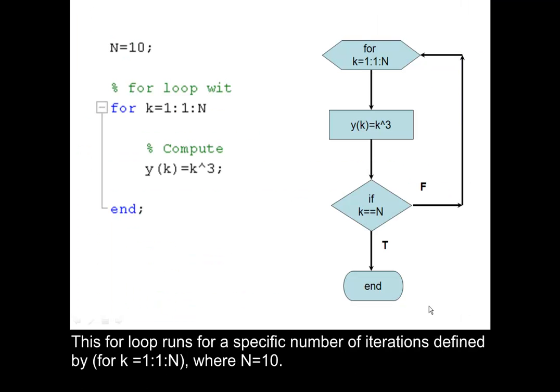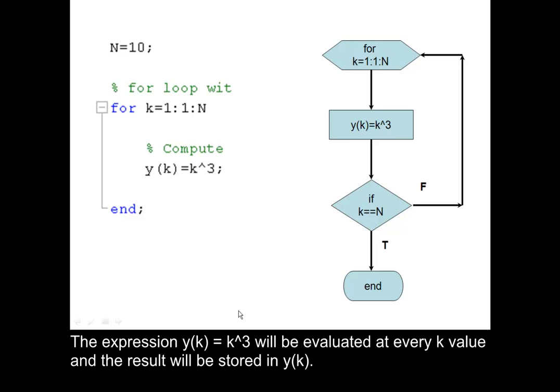This for loop runs for a specific number of iterations, defined by for k equals 1 colon 1 colon n, where n is equal to 10. The expression y of k equals k cubed will be evaluated at every k value, and the result will be stored in the variable y at the index k.